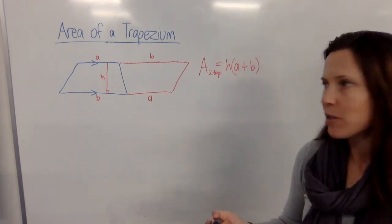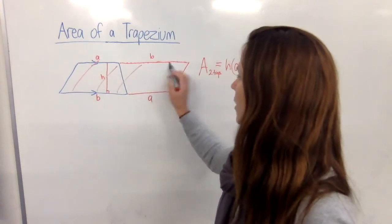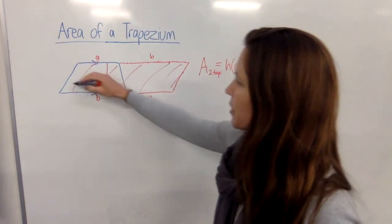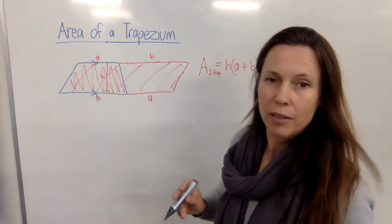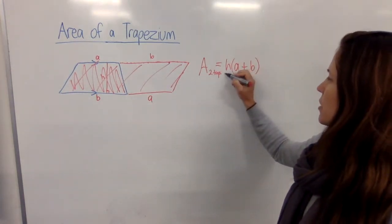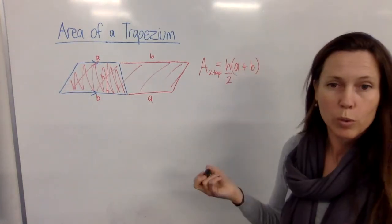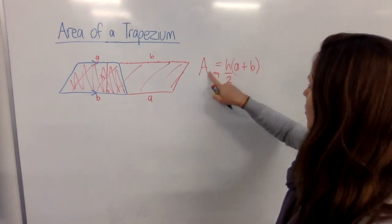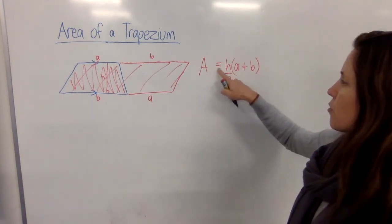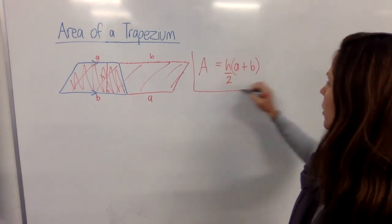But there's a problem. We've just found the area of this entire parallelogram and we only want this half, the trapezium bit. So we need to halve it. So what we do there is we just say let's divide that by two and that gives us the formula for one trapezium instead of two. And that's our formula that we're going to use.